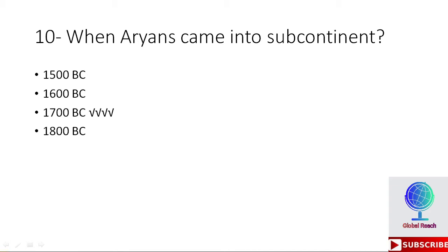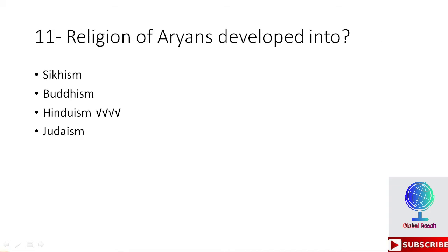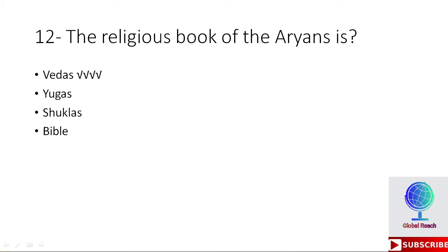MCQ 11: The religion of Aryans developed into — Sikhism, Buddhism, Hinduism, or Judaism? The right option is Hinduism. The religion of Aryans developed into Hinduism. MCQ 12: The religious book of Aryans is — Vedas, Yogas, Shuklas, or Bible? The right option is Vedas. The religious book of Aryans is the Vedas.